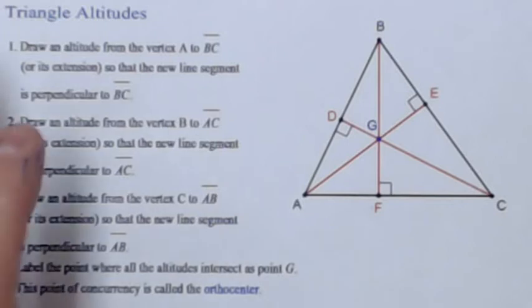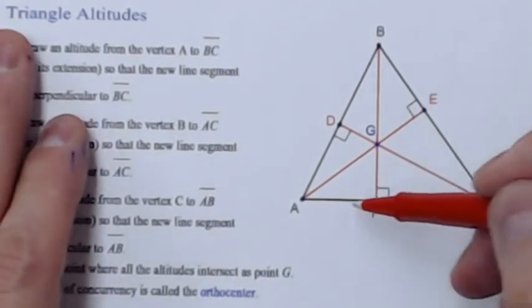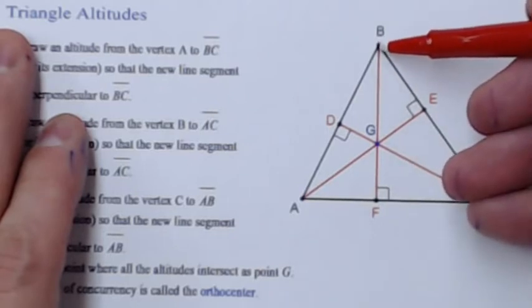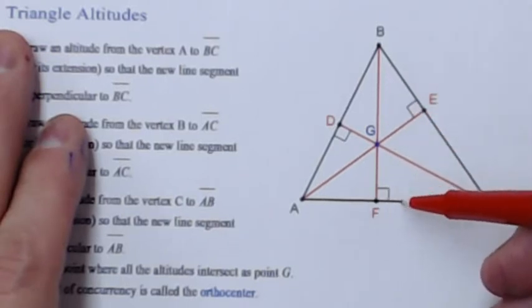What I'm trying to get across in this lesson is that an altitude runs from the base of the triangle to the opposite vertex, and that vertex, if you drop that line down, it has to be a right angle at this side here.